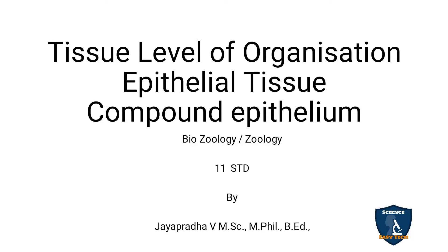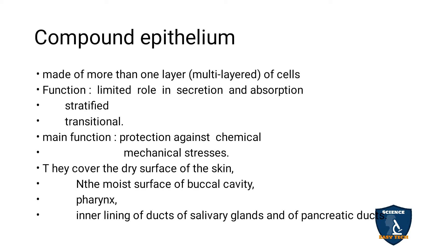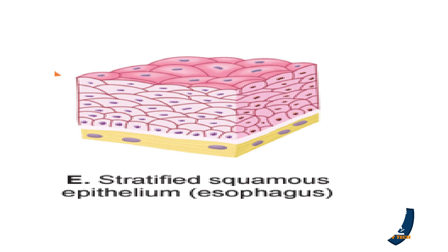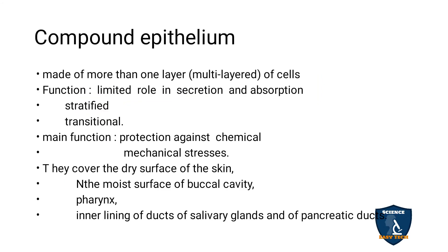Today we are going to discuss compound epithelium in epithelial tissue at the tissue level of organization. Compound epithelium is made up of more than one layer of cells. In simple epithelial tissue it is made up of a single layer, but here in compound epithelial tissue you can see 4 or 5 rows of cells. Such tissue is known as compound epithelial tissue.